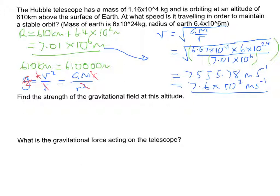Find the strength of the gravitational field at this altitude is the next part of the question. And the equation that we need to use for this is g is equal to v squared over r. We've just calculated the v squared and it's probably a good idea to use the number that's in your calculator. So that would have been 7555.78, so if that was in your calculator just don't clear it. Answer squared divided by the radius which we calculated above a bit earlier, 7.01×10^6.